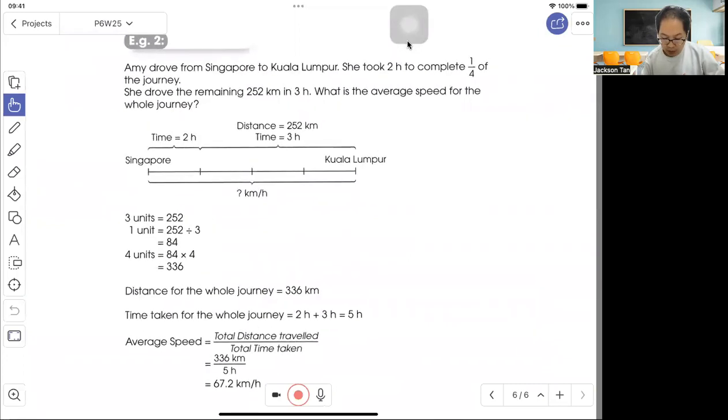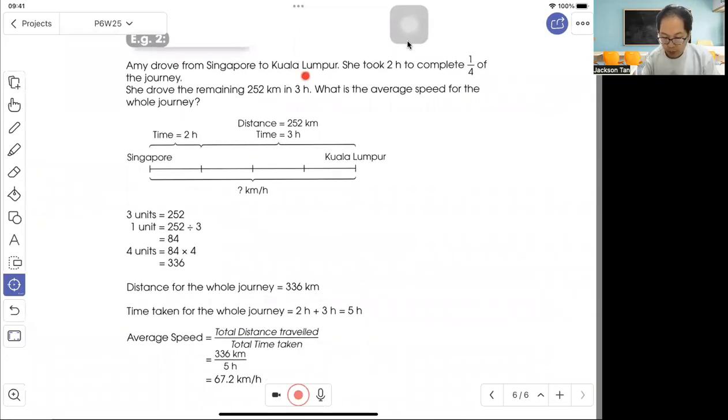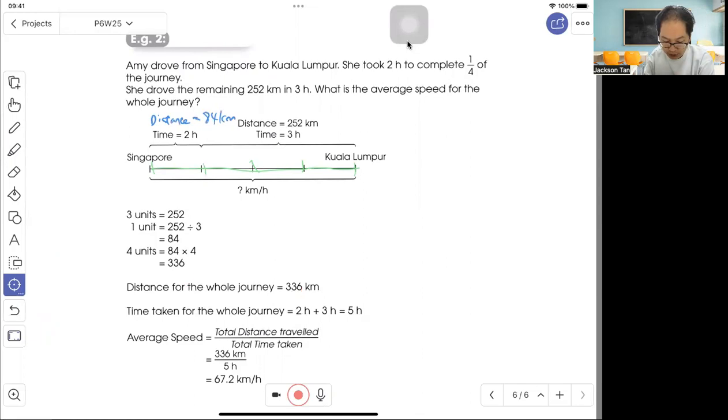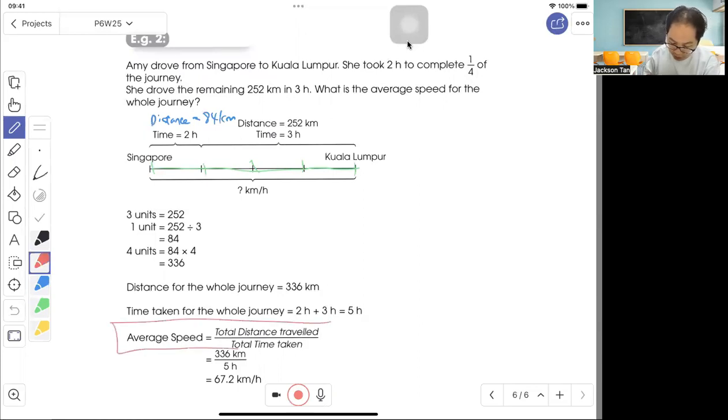Example two: Amy drove from Singapore to Kuala Lumpur. She took two hours to complete one quarter of the journey. The whole distance I cut into four parts, and one out of four is two hours. Then the remaining 252 km took three hours. What is the average speed for the whole journey? So first, three units is 252, one unit is 84. So this part is 84. Then I find the total distance: 366 km. Time taken: 2 plus 3 equals 5 hours. So average speed is total distance divided by total time: 366 km divided by 5 hours. That's how I get 67.2 km per hour.